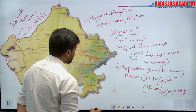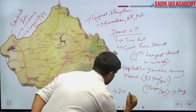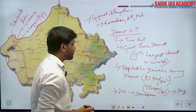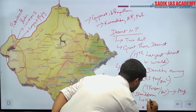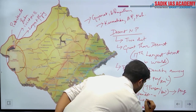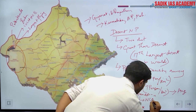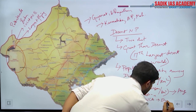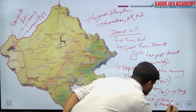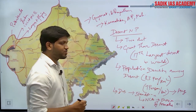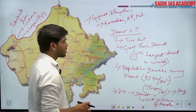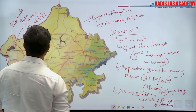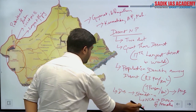Due to the spread of desertification, there is a problem of sandstorms reaching the national capital area, caused by the erosion of the Aravallis, which serve as a natural green barrier.